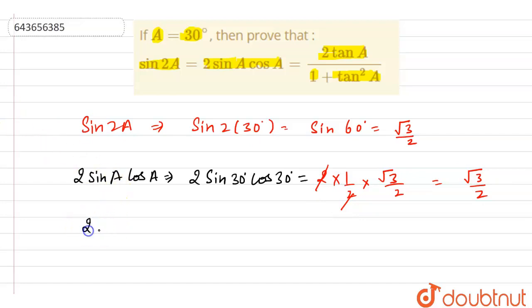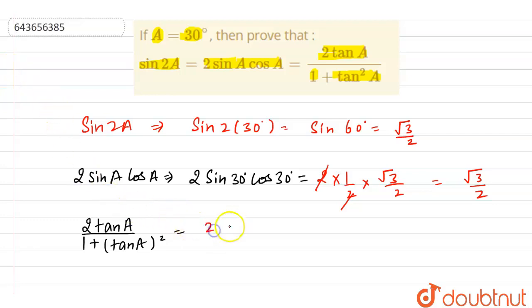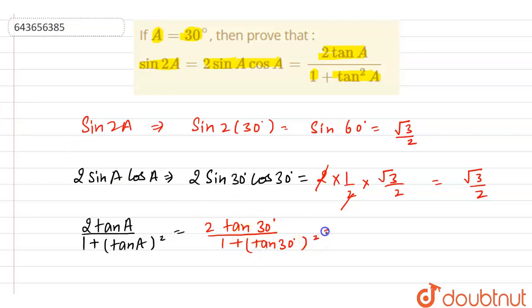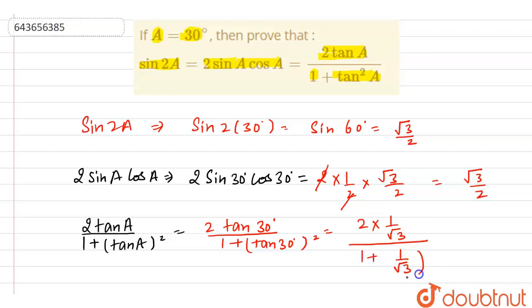Now let's also find the value of 2tan(a) divided by 1 plus tan²(a). Substituting a = 30°, it is 2tan(30°) divided by 1 plus tan²(30°). We know that tan(30°) = 1/√3, so it becomes 2 × (1/√3) divided by 1 plus (1/√3)².